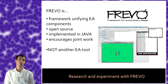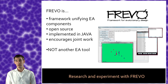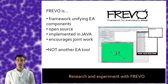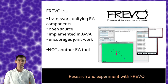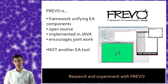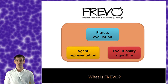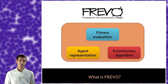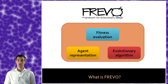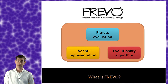We think there is a need to unify this, and we created a software called Frevo to unify evolutionary computing by reducing these parameters to three major components: the representation of the problem, the representation of the brain of the agents, and the representation of the evolutionary computing algorithm itself.